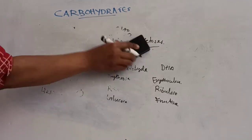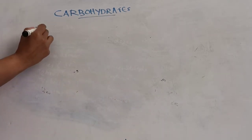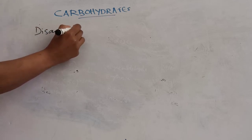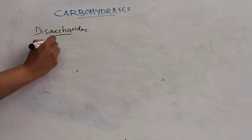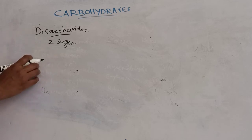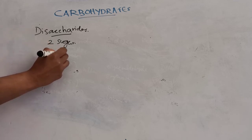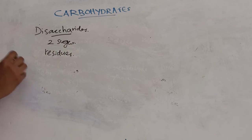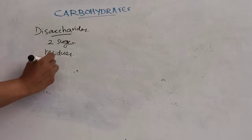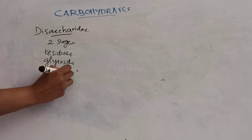The second classification is disaccharides. Disaccharides are composed of two sugar units — they contain two covalently linked monosaccharide units. These individual monosaccharide units in a disaccharide are called residues. Disaccharides are soluble in water, and the monosaccharide units are linked through a glycosidic bond. Some disaccharides are reducing sugars and some are non-reducing sugars.